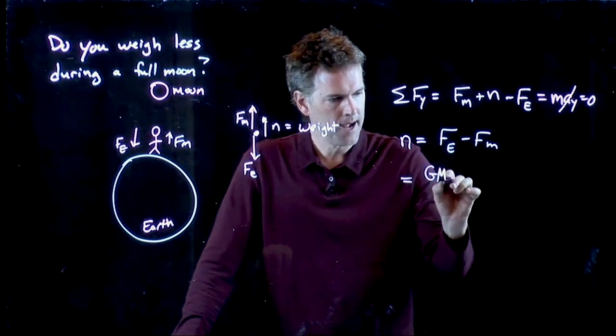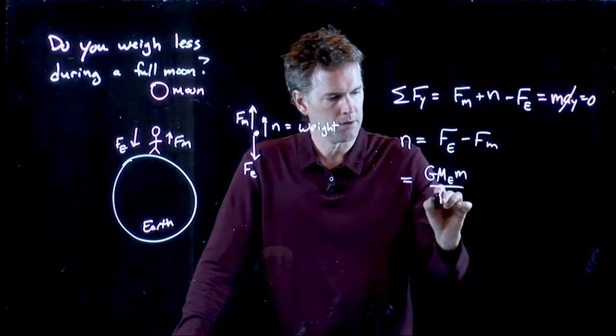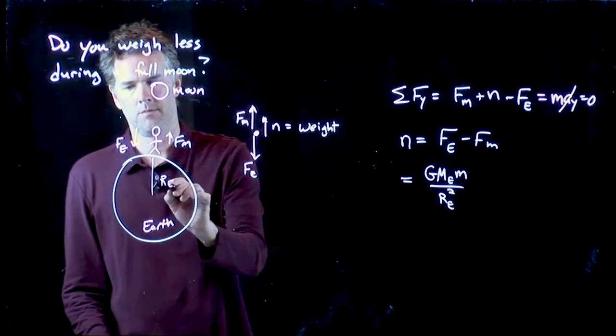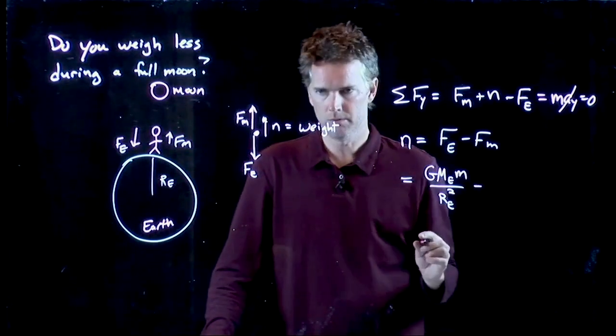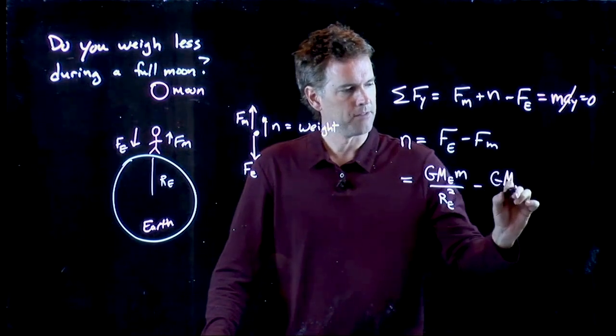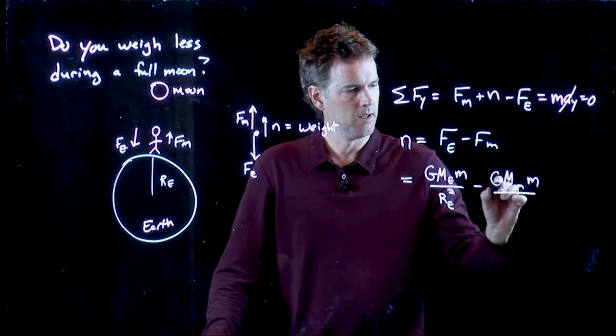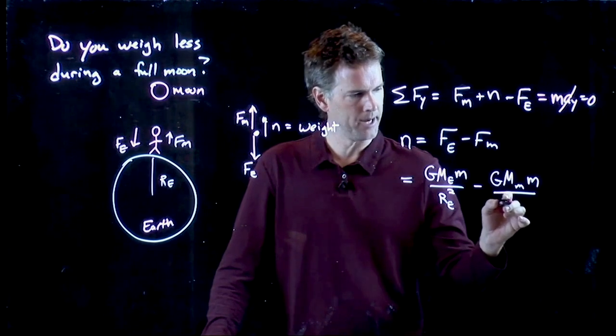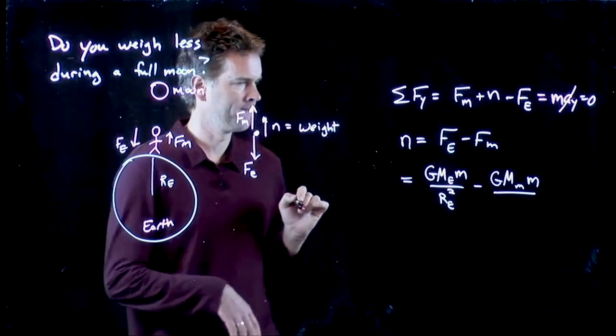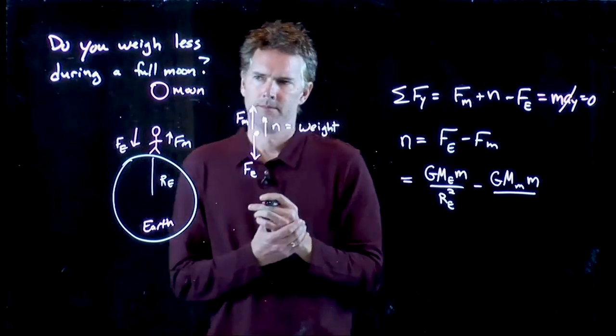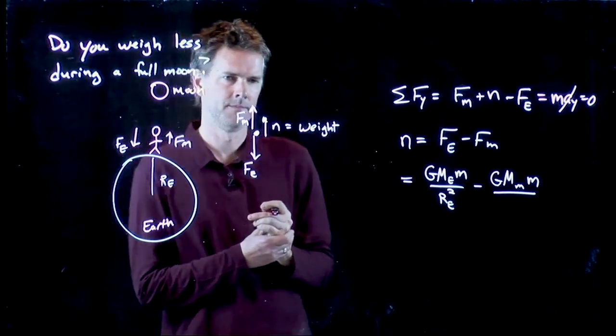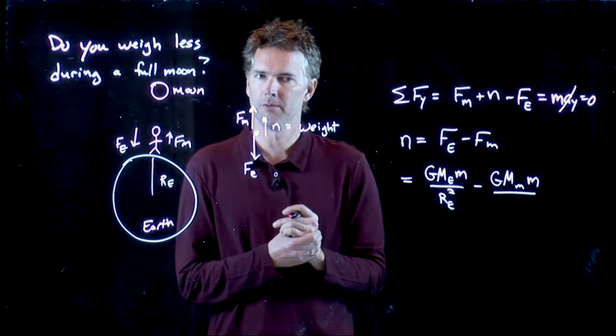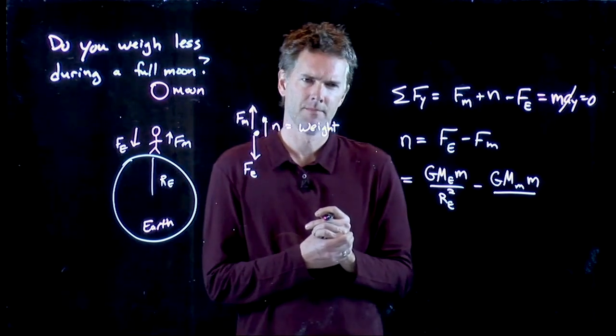And we know exactly what those things are. Fe is G, mass of the Earth, mass of me, divided by the radius of the Earth squared. F of the moon is going to be G, mass of the moon, mass of me. But now what do I want to put down here? Jorge, what should I put in the denominator of this equation? The radius of Earth plus what? Actually, the radius of the moon.